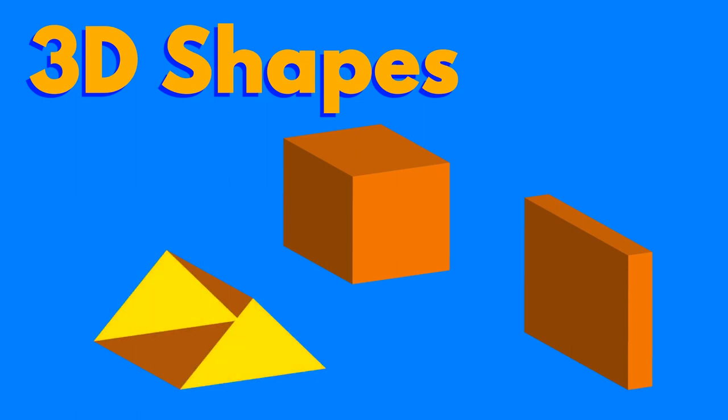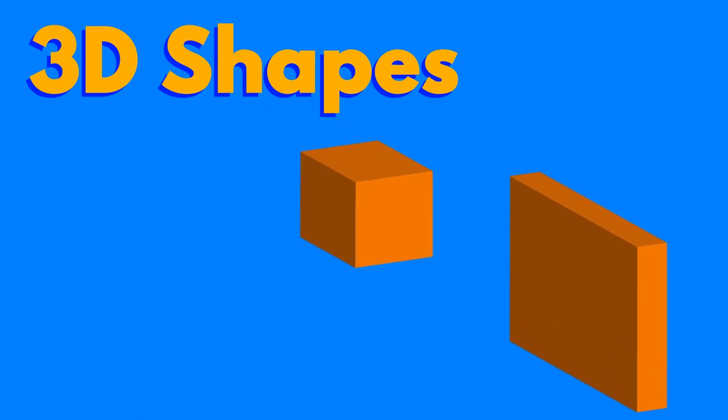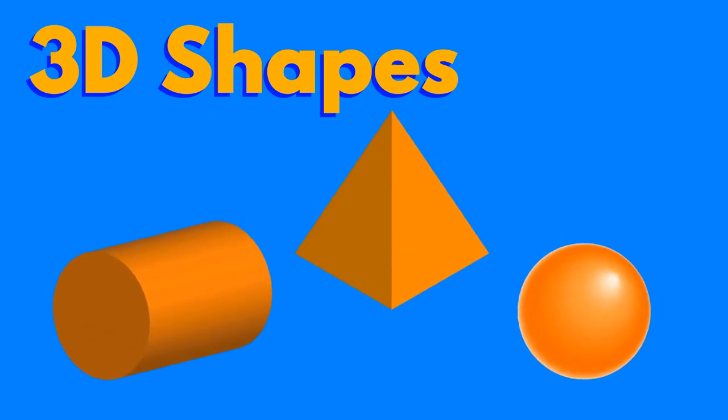When referring to 3D shapes we often think of regular polyhedra such as cubes and rectangular or triangular prisms. A prism has two parallel end faces that are the same size and shape. Other 3D shapes include the cylinder, the pyramid and the sphere.